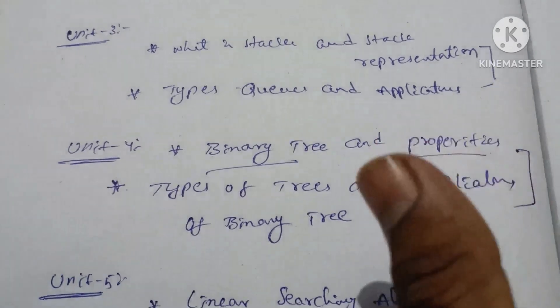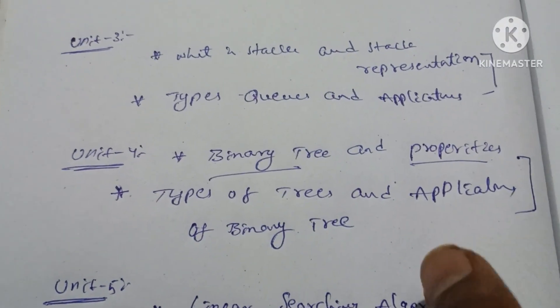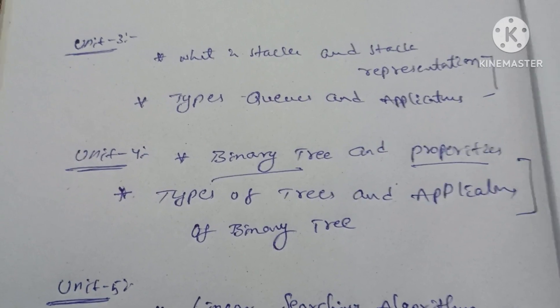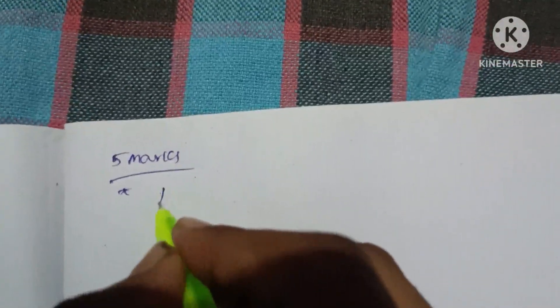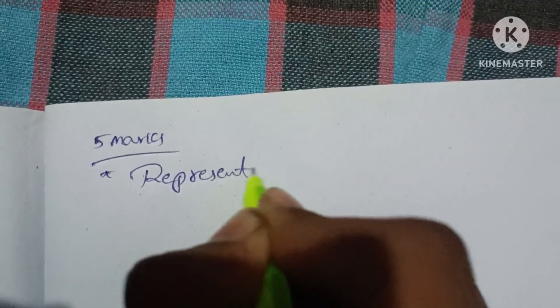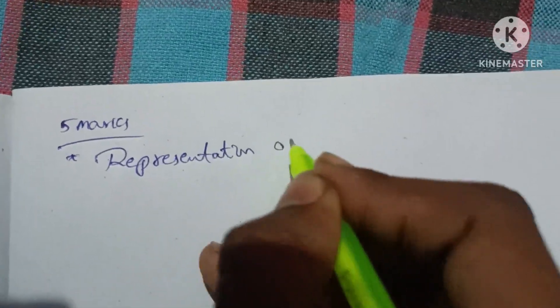The question is about the presentation. If you do a presentation, you will mark the subject. Let's look at the five marks. Five marks is a representation of data structures.